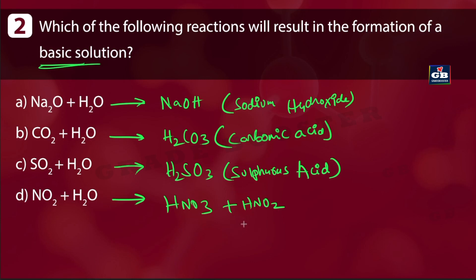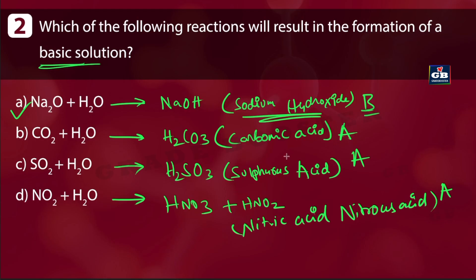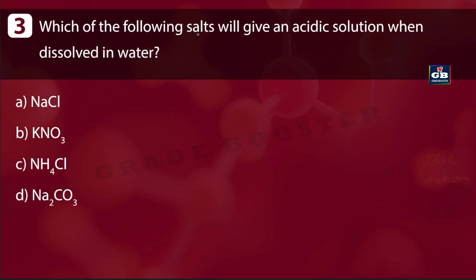So among these four reactions, carbonic acid, sulfurous acid, and nitric/nitrous acid are all acids, while sodium hydroxide is a base. Sodium hydroxide forms a basic solution. So option A — Na₂O + H₂O → NaOH — is the correct answer.